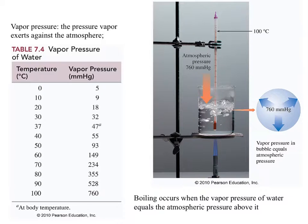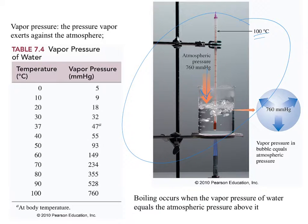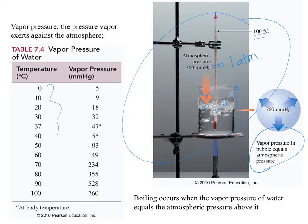Vapor pressure is the pressure vapor exerts against the atmosphere. Looking at water being boiled at 100 degrees Celsius: atmospheric pressure assuming standard conditions is 1 atmosphere, which is 760 millimeters mercury. The vapor pressure in the bubbles equals the atmospheric pressure — that's when it truly starts to boil. Notice that at different temperatures, your vapor pressure is different as well, which connects to the relationship between temperature and pressure.